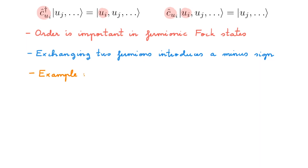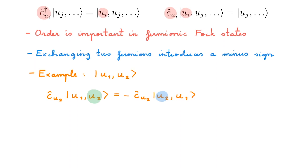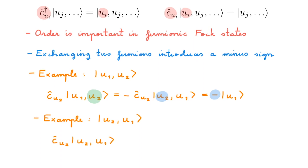As a simple example, consider the Fock state |u1, u2⟩. If we apply the annihilation operator c_u2, we see that u2 is not at the beginning of the list, so we first need to bring it there by exchanging u1 and u2, introducing a minus sign. Now that u2 is at the beginning we can annihilate it, obtaining minus |u1⟩. As a second example, consider the Fock state |u2, u1⟩ — this is a different state because the order differs. Applying c_u2 here, u2 is already first in the list so we annihilate it straight away and get |u1⟩ with no minus sign, because we didn't have to exchange any fermions.